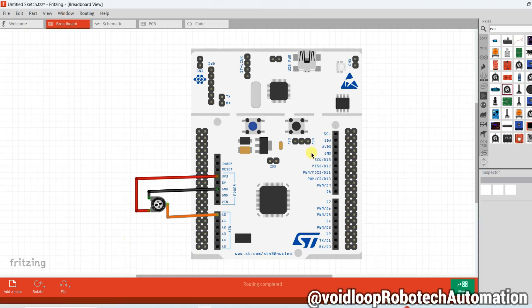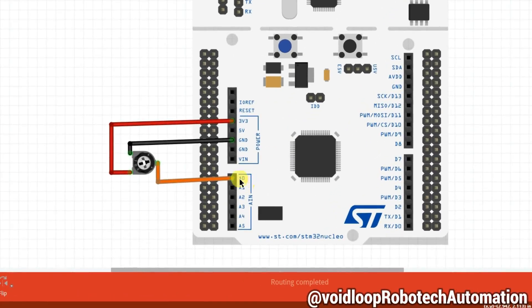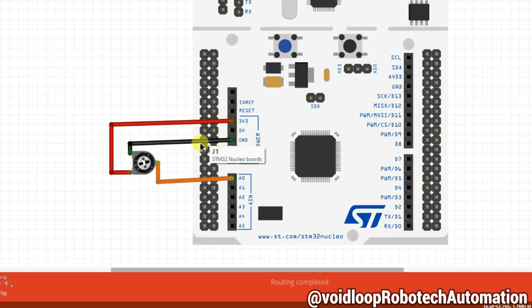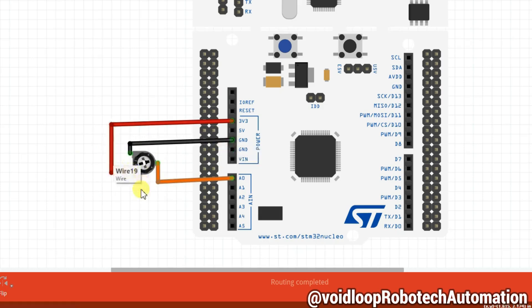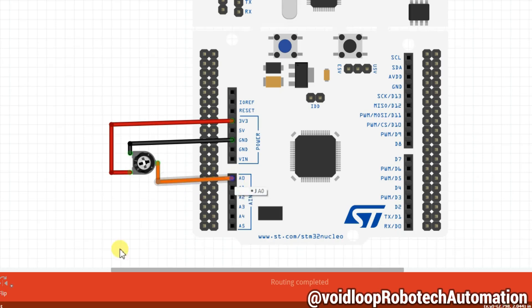This is the schematic diagram. You can see I am using the A0 pin — this is the PH0 pin, which is an analog input. To generate an analog signal, I am using a potentiometer. The potentiometer requires 3.3V and ground, and its output goes to the PH0 pin. Let us see the programming.